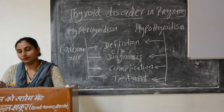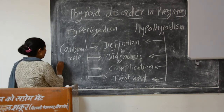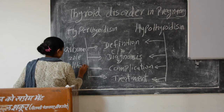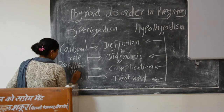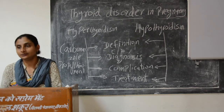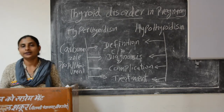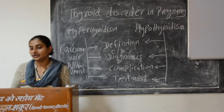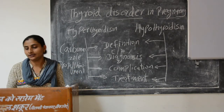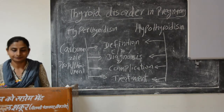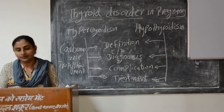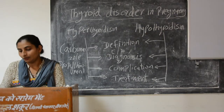The second drug is Propylthiouracil (PTU). The dose is 300 to 450 mg daily when thyroid function is not normal, and the maintenance dose is 50 to 150 mg daily. Propylthiouracil is the drug of choice — it is safe and effective.